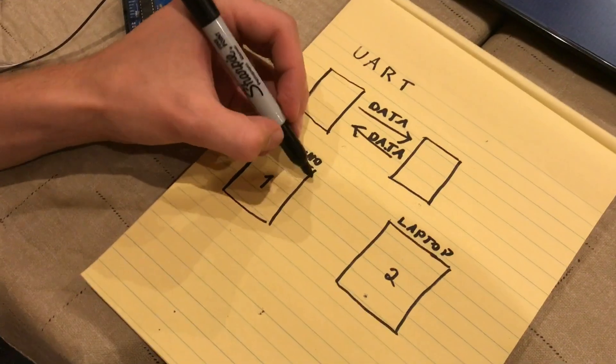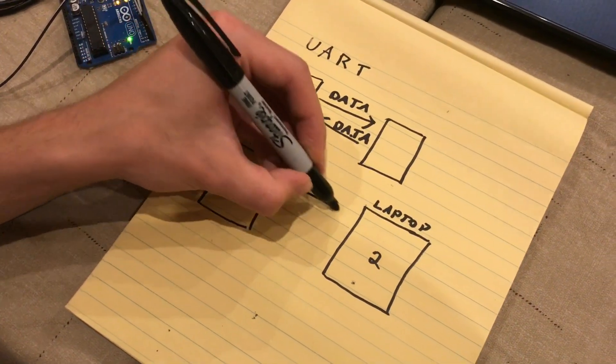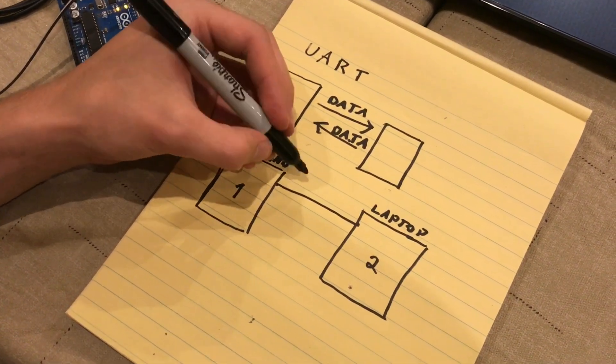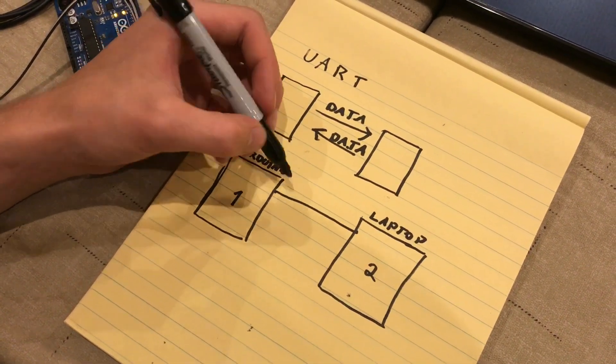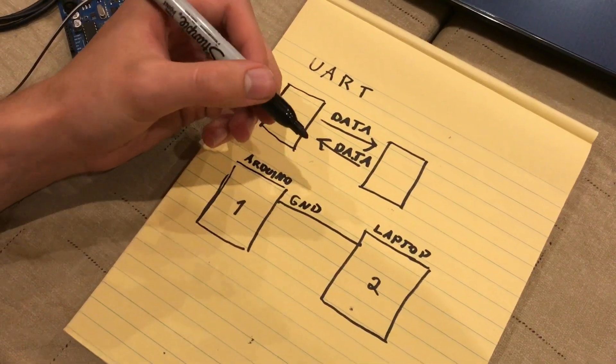All right, so I said there's three pins. The first pin, or the first wire that's connecting, is ground, which I'll abbreviate GND.